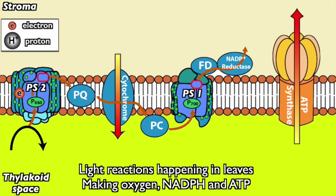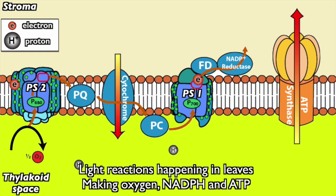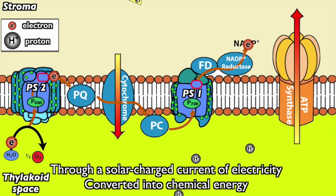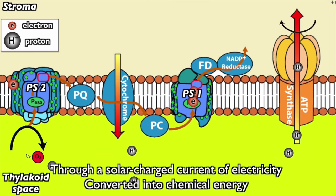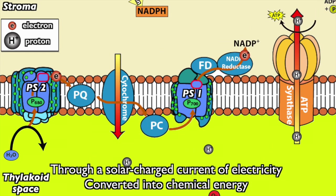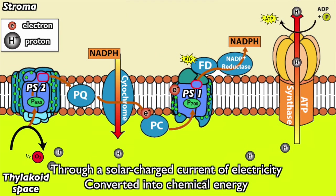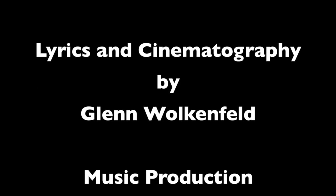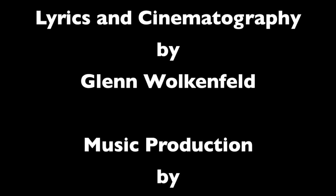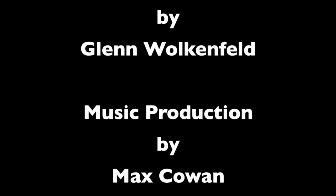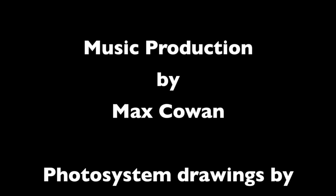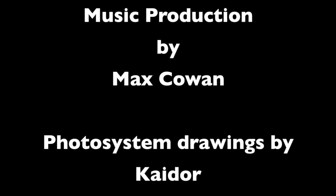Light reactions happening in leaves, making oxygen, NADPH and ATP. Through a solar charge current, the electricity converted into chemical energy.